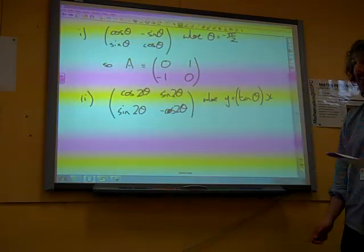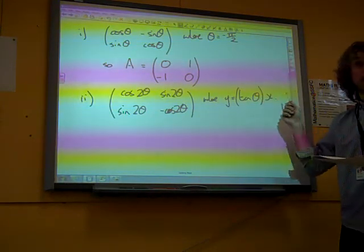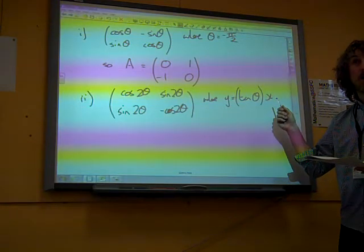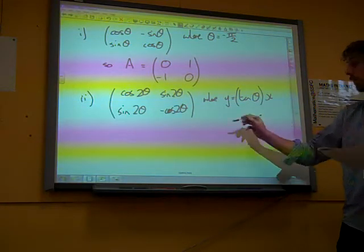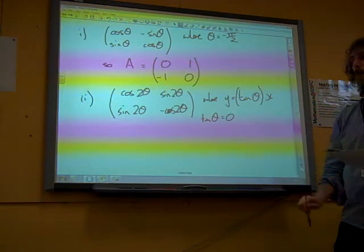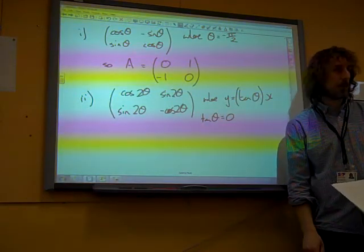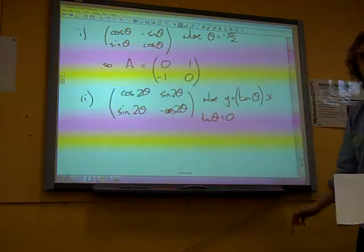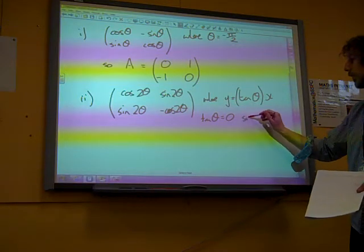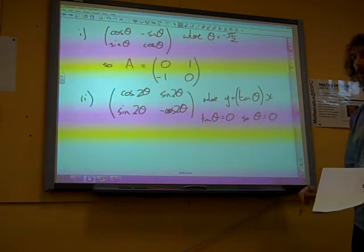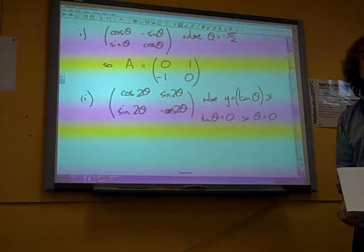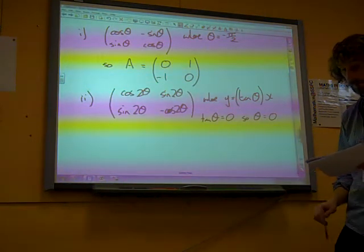To draw the x-axis, we need y equals 0. So we need tan theta to be 0. And if tan theta equals 0, then the smallest value of theta that produces that is 0. 2 times 0 is still 0. This is some tough maths.